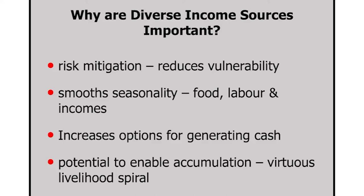When I was working in Dumka, people would always tell me that the monsoon season was the period of hardest work but also the period of hunger, when there was no food to eat. Third, diversification increases your options for generating cash — in today's time it's not just food that people need, but cash for educating children, for health expenses, and so on. And also the potential to enable accumulation: parents want to save money and improve in the future, expanding their resource space so the next generation does better.